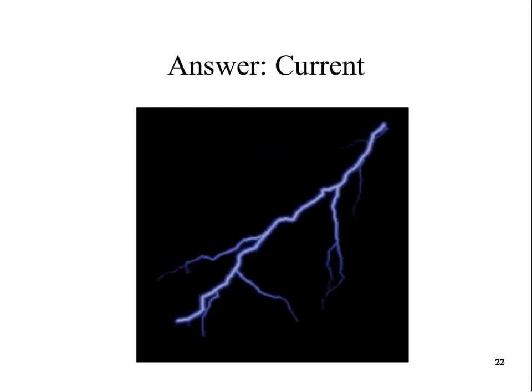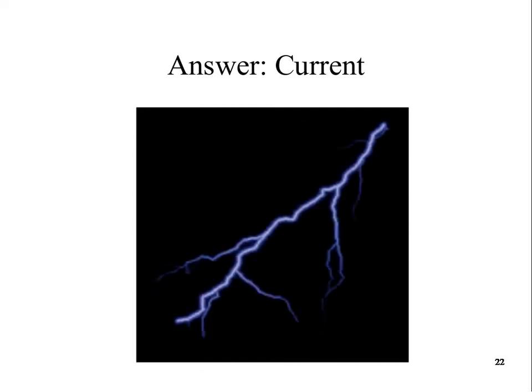Current, the opposite of current, by the way, is static electricity, where a charge builds up and stays stationary or sits in one place for a while. Lightning relies on a buildup of charge or static electricity in the clouds and the ground. And then when it builds up a sufficient amount, then a release of that charge is a current.